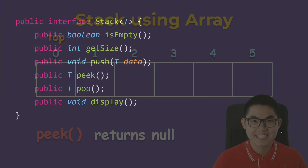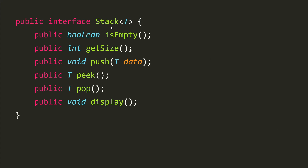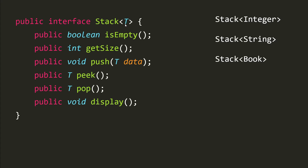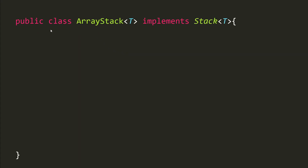Now let's look at the code in Java. The stack interface uses a generic data type, meaning we can create a stack of only integers, only strings, or any object. The methods for stack are: isEmpty, getSize, push, pop, peek, and display.